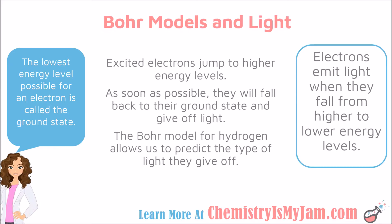You may be wondering why I have included this information about light and the electromagnetic spectrum in a series about the atom. It's because under certain conditions, the atom can give off light. Electrons are in energy levels, and their lowest available energy level is called the ground state. Sometimes the atom receives energy — maybe it gets heated up or absorbs light — and it excites the electrons, so they jump from their ground state up to a higher energy level. As soon as possible, they fall back to their ground state, and when they do, they emit that energy in the form of light.